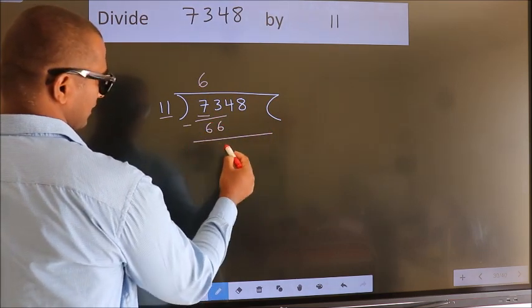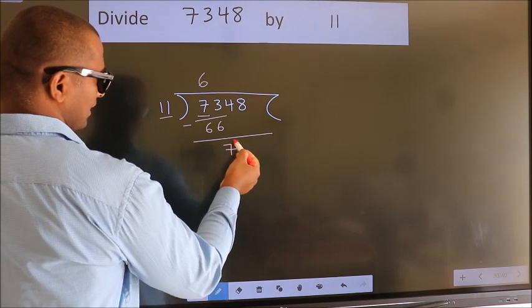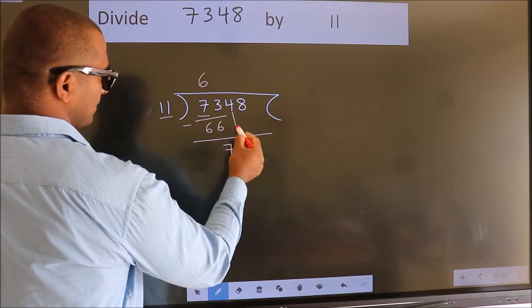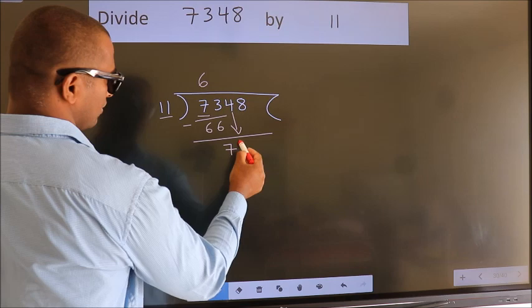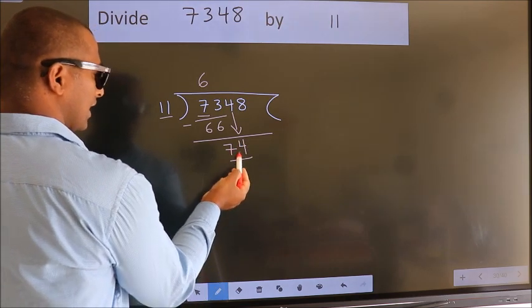Now we should subtract. We get 7. After this, bring down the beside number, so 4 down. So 74.